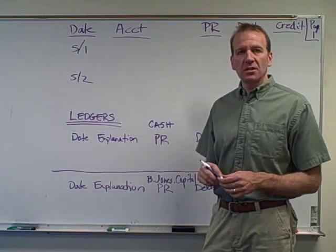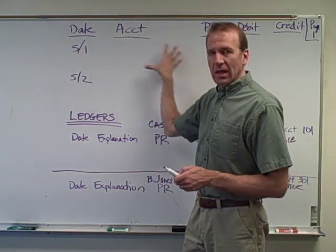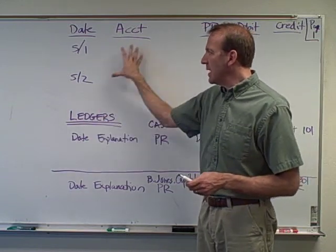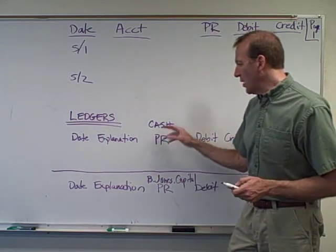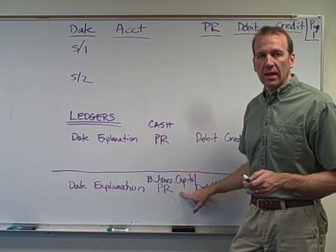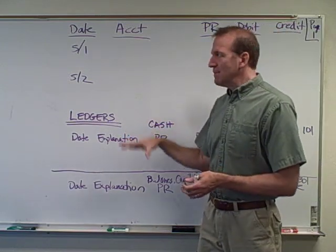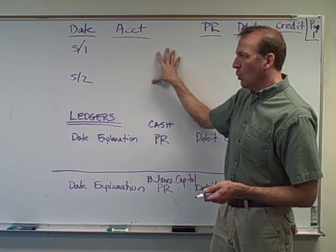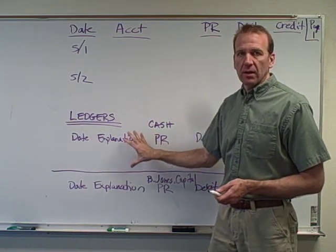We're going to be looking at transactions in the journal. I've got an example of a journal here, and then how we put these transactions into their respective ledgers. On the board I've got two ledgers: cash and the capital account ledger. These would actually be separate pages, but I'm just doing this on the board so we can see what happens. The journal would be one thing — our general journal — and the ledgers would be something different.